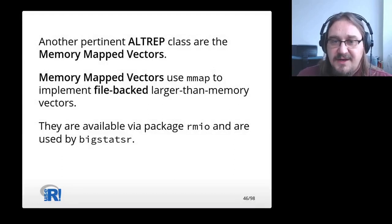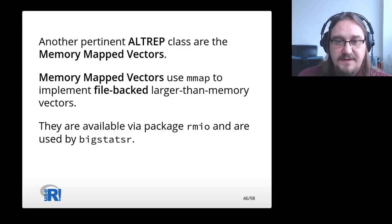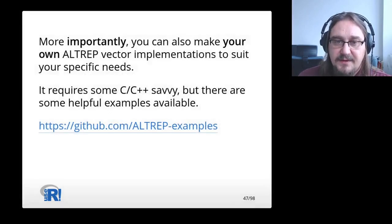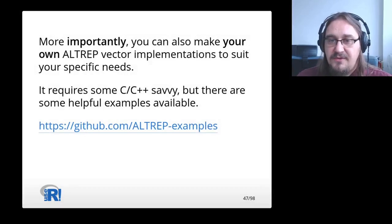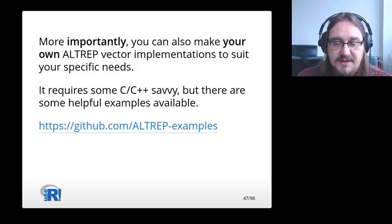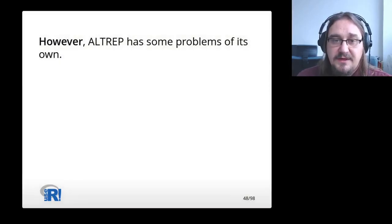Another pertinent Altrep class, apart from compact integer sequences, are memory mapped vectors. Memory mapped vectors use mmap to implement file-backed larger-than-memory vectors. They are available via package rmio and are used by bigstatsr. More importantly, though, you can make your own Altrep vector implementations to suit your specific needs. It requires some C and C++ savvy, but there are some helpful examples available.